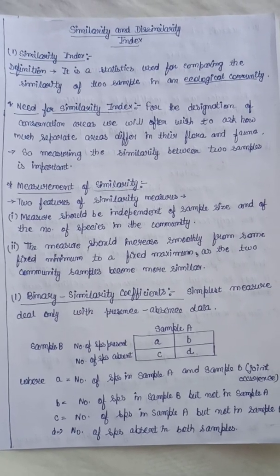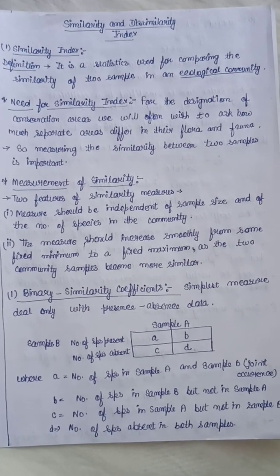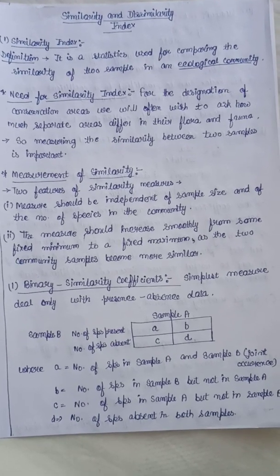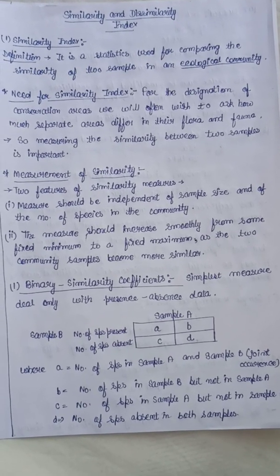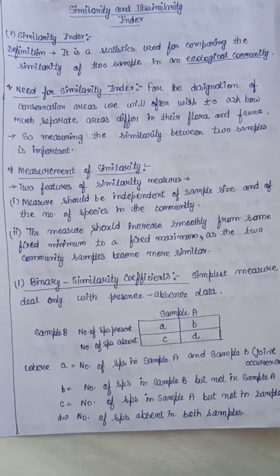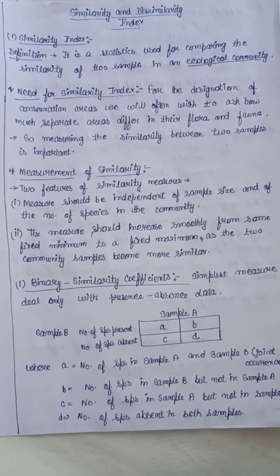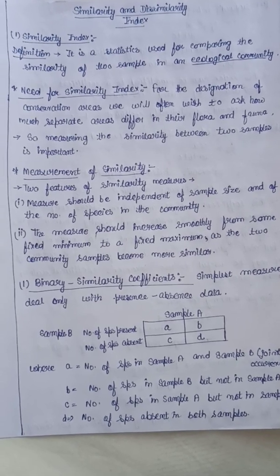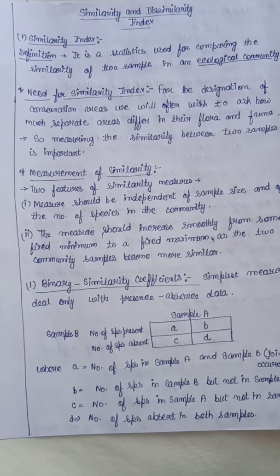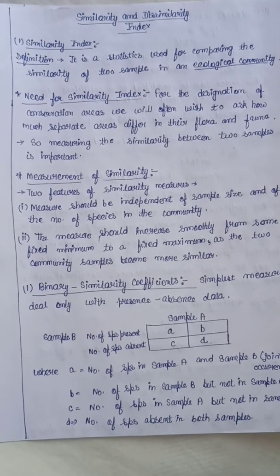The second feature is that the measure should increase smoothly from some fixed minimum to a fixed maximum as the two community samples become more similar. As similarity increases between two community samples, their index values should also increase from a minimum to a fixed maximum. These are the two criteria for similarity indexes.